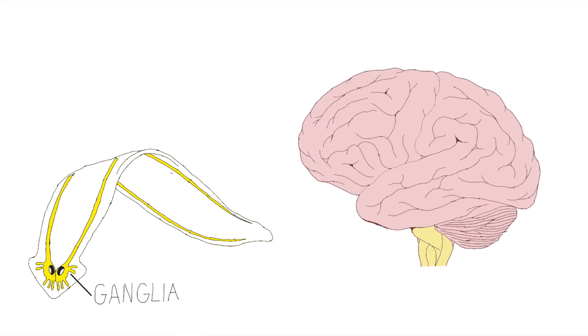Planaria are a common species of flatworm. They have a simple central nervous system, which makes them ideal subjects for observing behavioral responses.